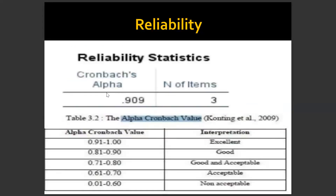The next part would be your reliability test or statistics, using Cronbach Alpha. The interpretation is as follows: 0.91 to 1 is excellent; 0.81 to 0.9 is good; 0.71 to 0.8 is good and acceptable — this is what we need to achieve for reliability testing; 0.61 to 0.70 is acceptable; and below 0.61 is non-acceptable.